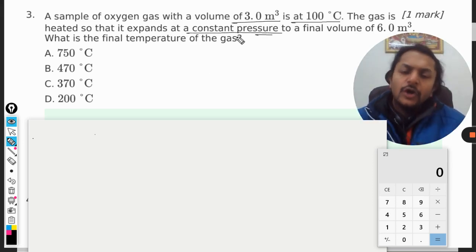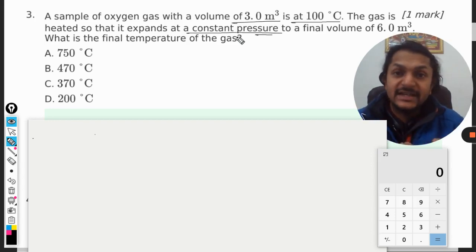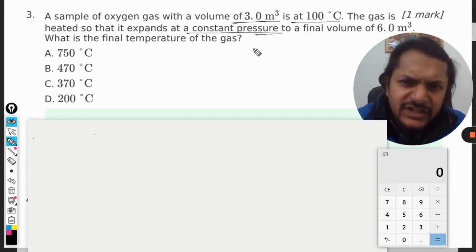So the gas is there in the container at state number one, and now it follows a process. The process is constant pressure, which is given a special name and that is known as isobaric process.